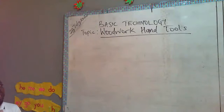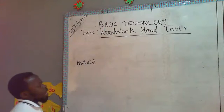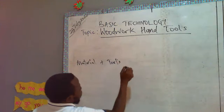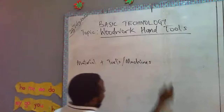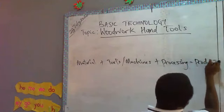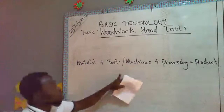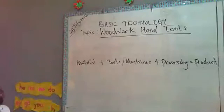When talking about technology, before any product can be made, there are certain concepts involved. First, we have materials — materials used to make that item. Then we have tools and machines. Then we have processing. All this leads to a product. In simple mathematical terms, technology involves: materials plus tools or machines plus processing equals the product.